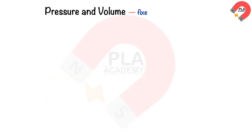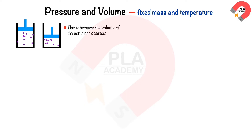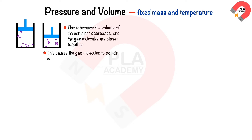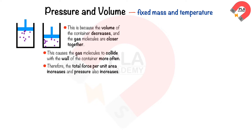The relationship of pressure and volume of gases at fixed mass and temperature is called Boyle's Law. If the temperature and mass of a gas remain constant, the pressure of the gas increases when it is compressed. This is because the volume of the container decreases and the gas molecules are closer together, causing them to collide with the wall of the container more often. Therefore, the total force per unit area increases and pressure also increases.